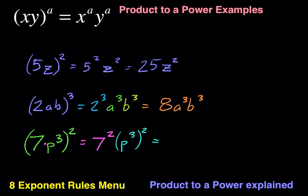So the final answer is going to be 7 squared is 49. And then here it's 3 times 2 is 6. So 49p to the sixth.